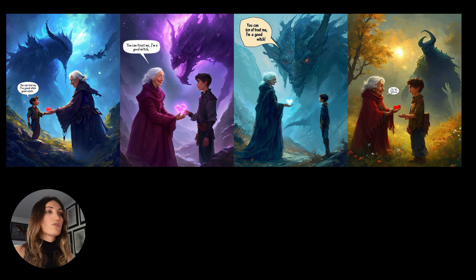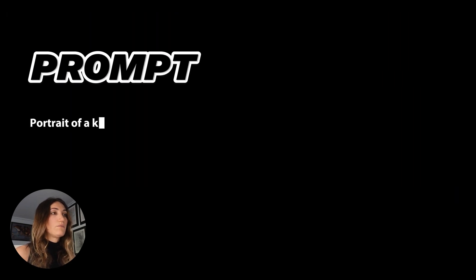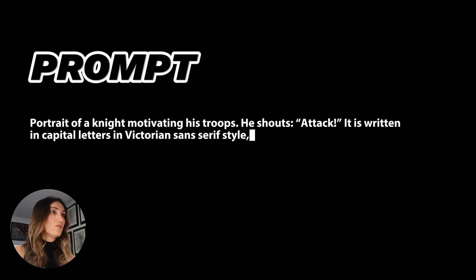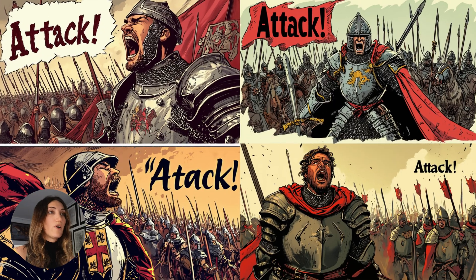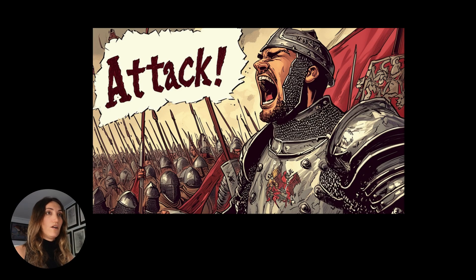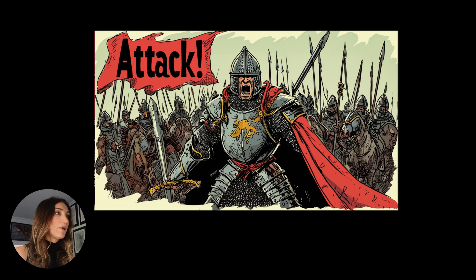What's amazing on top of that is that I can also choose the typography style of my text. I prompt an image of a knight on the battlefield with his troops in the background who must shout 'Attack!' — I want it written in capitals in a Victorian style without serifs, and I want the overall style to be comic book. On the first proposal, SD3 respected what I asked: the knight is in the foreground, his troops in the background, and the typography is written as I wanted. The second one is not bad either — it respected my prompt, with the character in the foreground shooting and the soldiers behind.